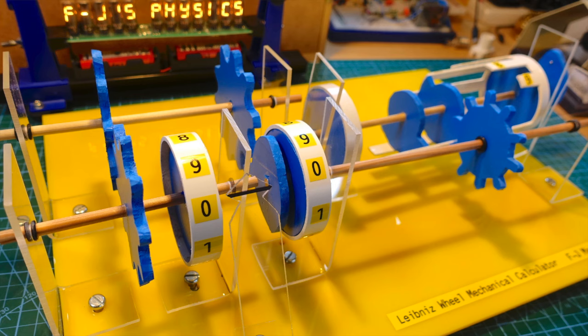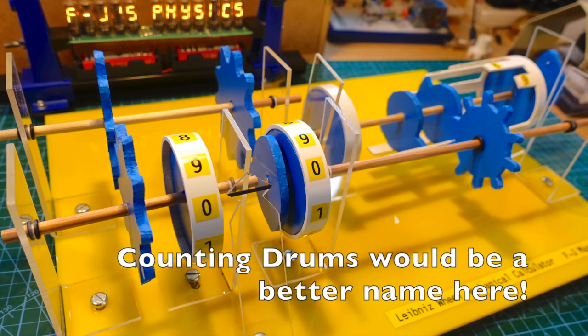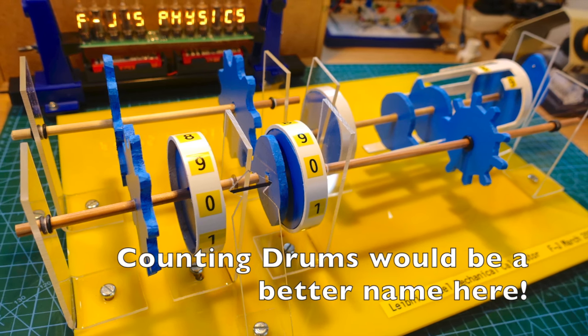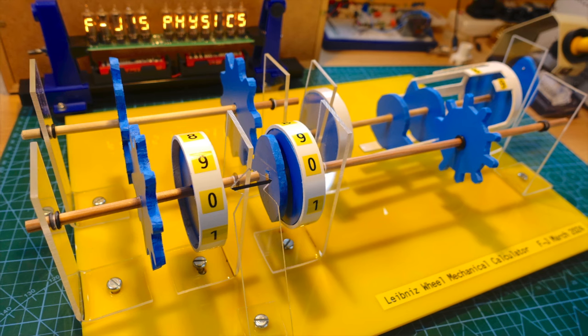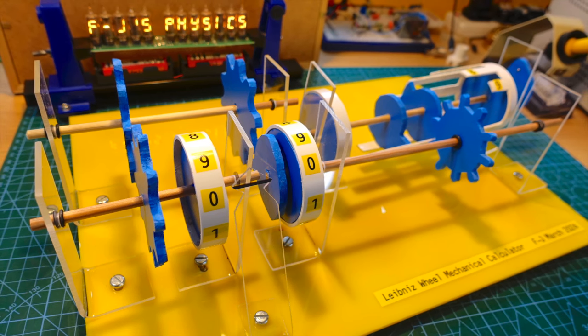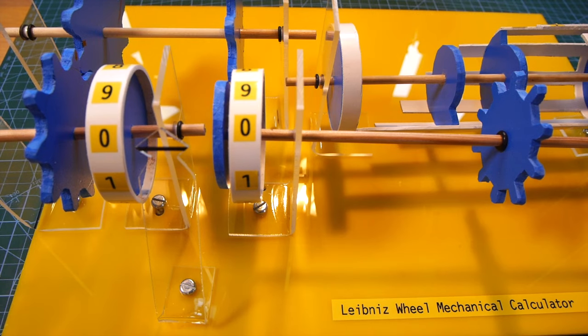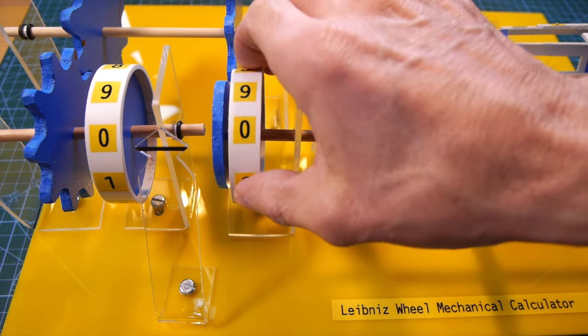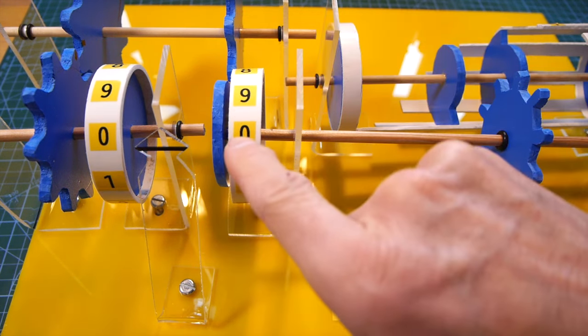So what we then need to do is work out how many times it's been rotated in other words how many teeth it's been turned through. So we have some counting wheels and they will only count up to nine a single wheel so we then need a set of gears and a second counting wheel that will do the carry and go 10, 11, 12, 13 etc.